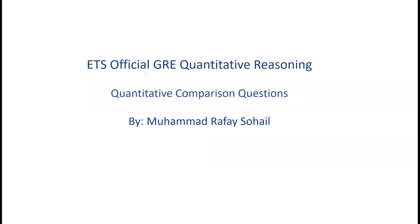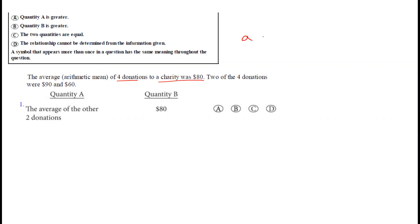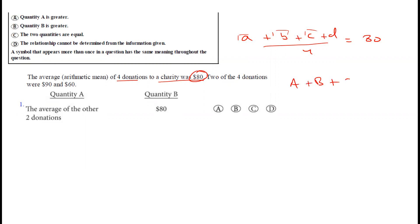Hello everyone. Today we'll be doing ETS official GRE quantitative reasoning, and the topic is quantitative comparison questions. For the first question: the average of four donations to a charity was 80. So we have (A + B + C + D) / 4 = 80. These are our four donations, and two of the four donations were 90 and 60.